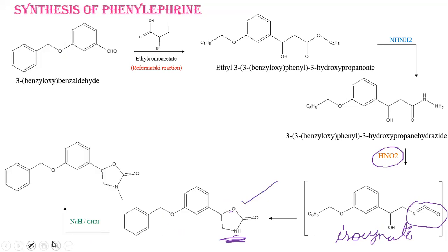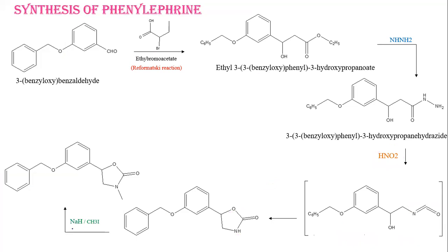The heterocycle is then treated with sodium hydride and methyl iodide. Sodium hydride acts as a base and abstracts a proton from the heterocyclic ring. After abstraction of this proton, there is replacement by a CH3 moiety. So the hydrogen of the heterocycle is replaced by CH3, and after this reaction, we have added a CH3 moiety to the heterocyclic ring.